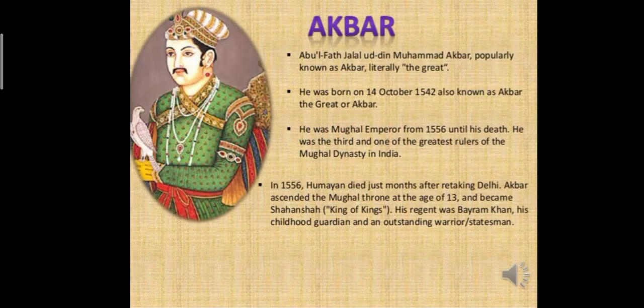Akbar, the eldest son of Humayun, is thought by many people to have been the greatest of all Mughal emperors. By the strength of his remarkable character and abilities, the empire became very powerful during his long reign of 49 years. None of the Mughal emperors who came after him was so capable. Akbar was very strong and brave — he loved riding, hunting, wrestling, sword fighting, and shooting with firearms.